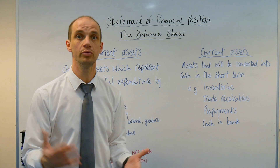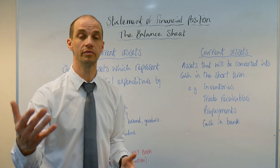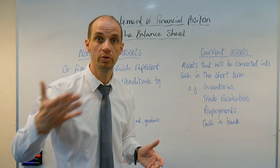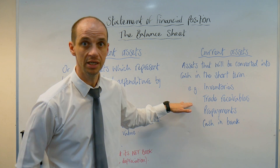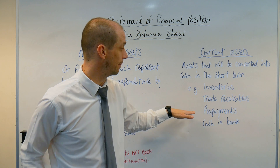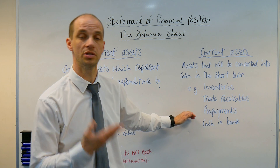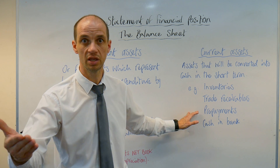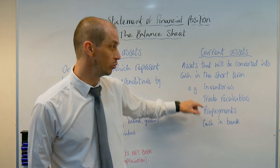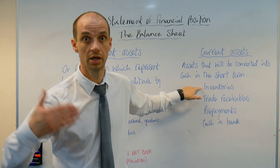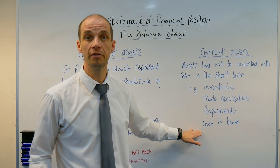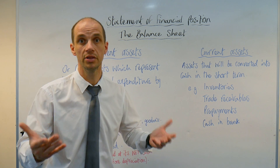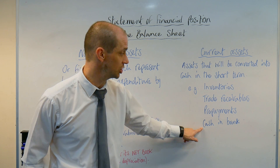Trade receivables is where someone has bought something from you but you have given them a period of trade credit and you're waiting to receive that money. Then prepayments — the fact that you've actually paid in advance for a given bill, meaning you will receive inventories at some point in the future. And then finally, the most liquid of current assets: cash in the bank.